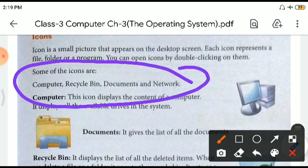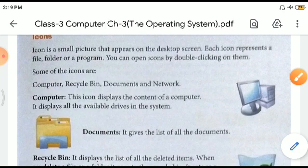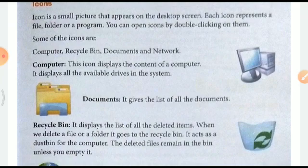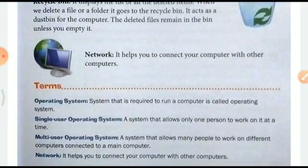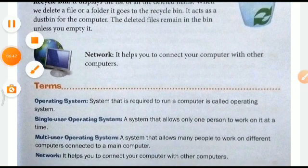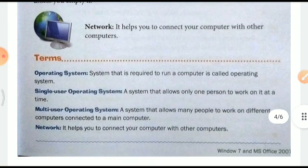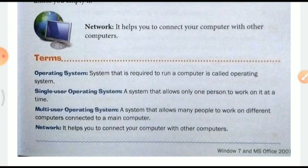The Computer icon displays the contents of the computer, including all available drives. Documents gives a list of all the documents. Recycle Bin displays all deleted items — when we delete a file or folder it goes into the Recycle Bin, which acts as a dustbin for the computer; to permanently erase a file we must delete it from the bin. Network helps us connect the computer with other computers. To summarize: an operating system is required to run a computer, single-user allows one person, multi-user allows many, and network helps connect computers.